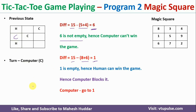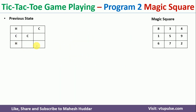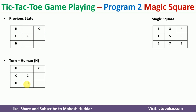The next turn is the human's, who plays at one of the remaining positions. The computer then checks its winning possibilities again. First, 15 minus (5 plus 4) equals 6, but position 6 is not empty, so it cannot win there. Next, 15 minus (1 plus 4) equals 10, and since 10 is greater than 9, the computer cannot win that way either.